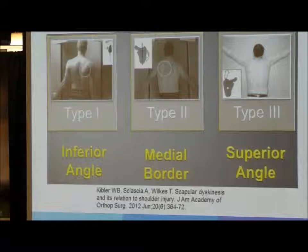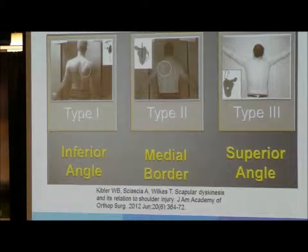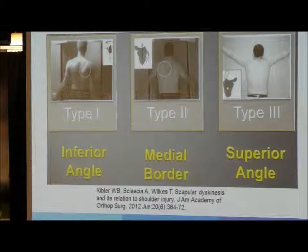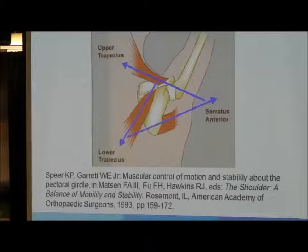Kibler's classification shows where the scapula is most prominent. In Type 1, prominence is most notable at the inferior angle, often due to over-tightness of the pec minor. Type 2 is the medial border being most prominent, most commonly seen in scapular winging. Type 3 has the superior angle most prominent, most often due to overactivity of the elevators — the levator scapulae and upper trapezius. The two main muscles determining scapular movement are the upper and lower trapezius and the serratus anterior.